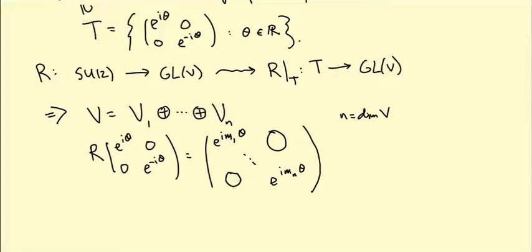In other words, if we pick a basis for V with a basis vector in V1, in V2, V3 up to VN, then we get this diagonal matrix.